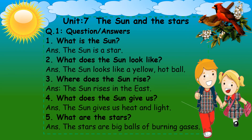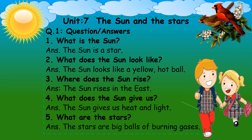Dear students, our first question is question number 1, and it is question answers. Number 1: What is the sun? The answer is the sun is a star. Number 2: What does the sun look like? The sun looks like a yellow hot ball. It is a star and it is made up of burning gases, so it looks like a yellow hot ball.